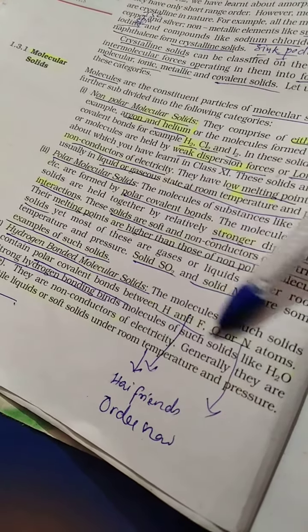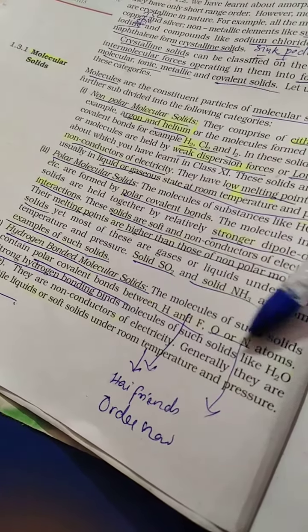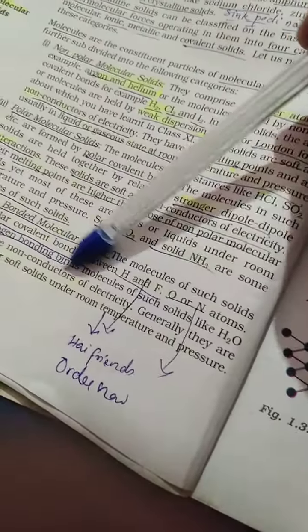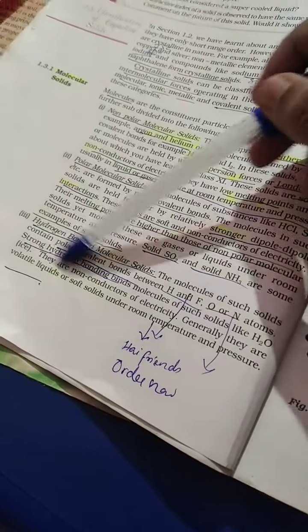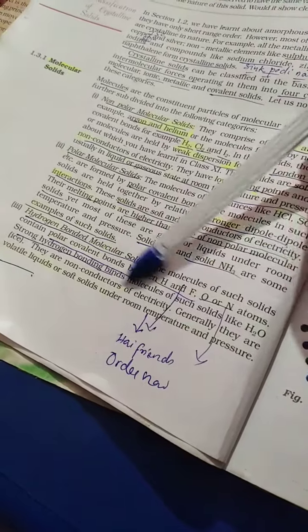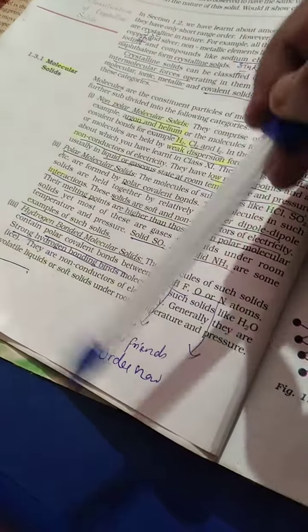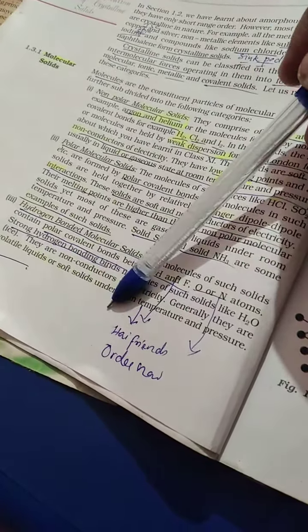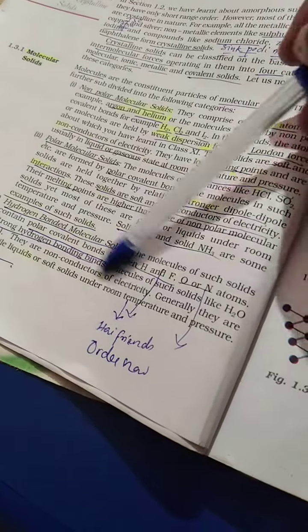Hydrogen bonds bind molecules in solids like water. It is a strong hydrogen bond and at room temperature and pressure these are non-gases.